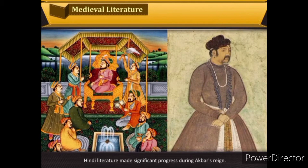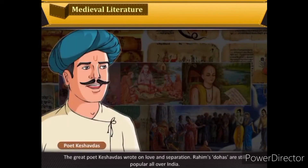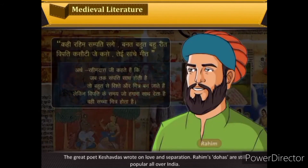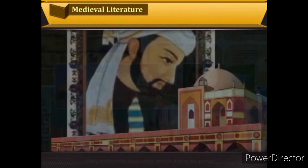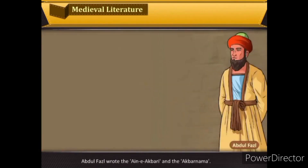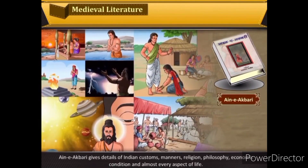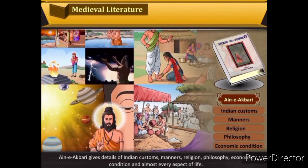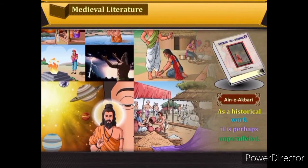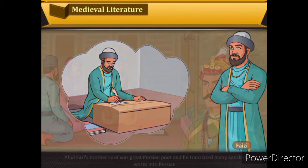Hindi literature made significant progress during Akbar's reign. Tulsidas and Surdas wrote in this period, and the great poet Keshavdas wrote on love and separation. Rahim's dohas are still popular all over India. Abdul Fazl wrote the Ain-i-Akbari, which gives details of Indian customs, manners, religion, philosophy, economic condition and almost every aspect of life. Abdul Fazl's brother Faizi was a great Persian poet who translated many Sanskrit works into Persian.